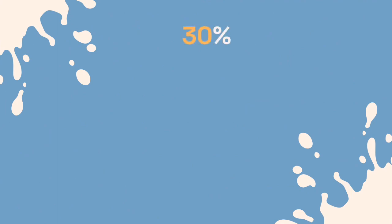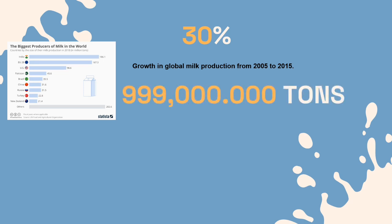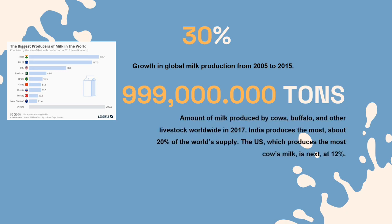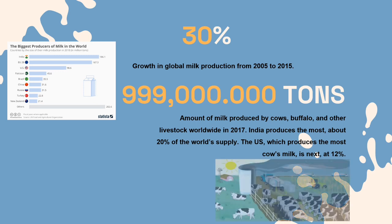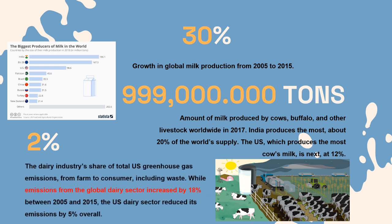There is about a 30% growth in global milk production from 2005 to 2015. A total of 909 million tons of milk was produced by cows, buffalo, and other livestock worldwide in 2017. India produces the most, about 20% of the world's supply, and the United States, which produces the most cow's milk, is next at 12%. About 2% of the dairy industry's share of total United States greenhouse gas emissions, from farm to consumer including waste. While emissions from the global dairy sector increased by 18% between 2005 and 2015, the US dairy sector reduced its emissions by 5% overall.